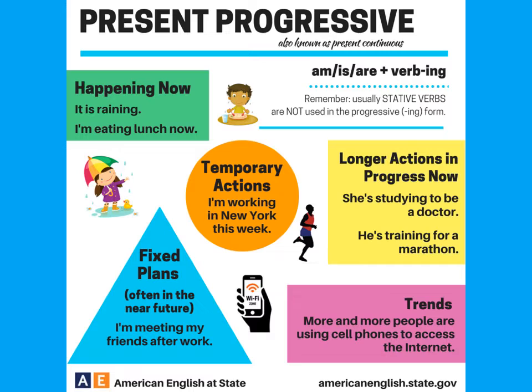To form the present progressive tense, you can use the verb to be — am, is, or are — plus the action and you add -ing to it. Just like here: it is raining.